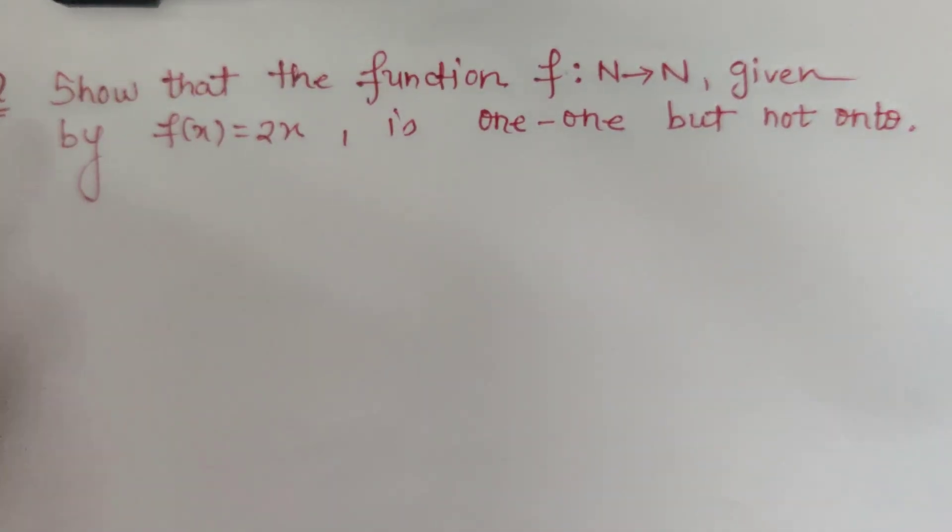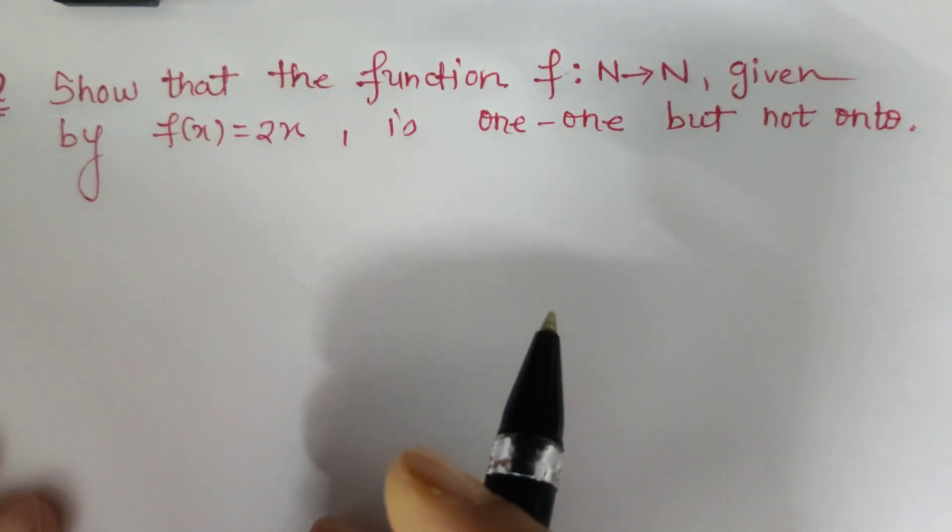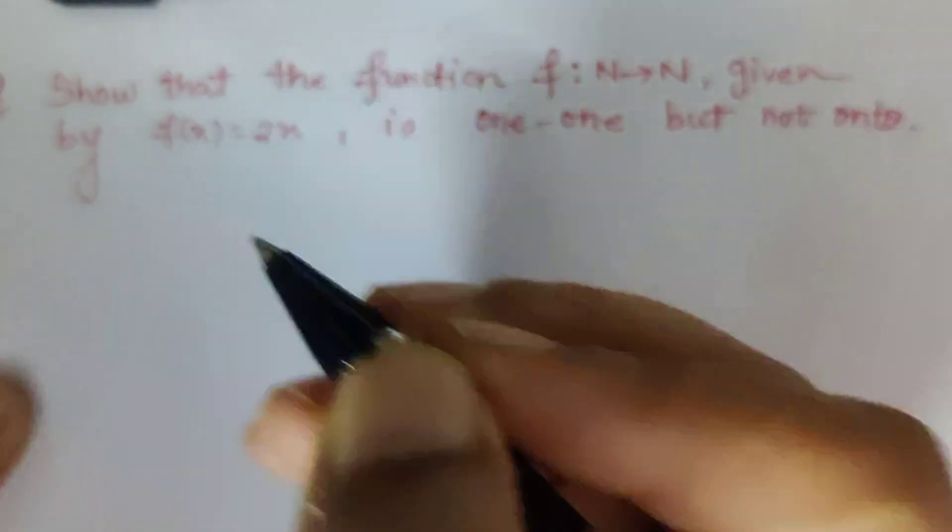Good evening friends, here I am with one problem where I have to prove that the function is one-one but not onto. So for this, let's first prove the function is one-one but not onto.